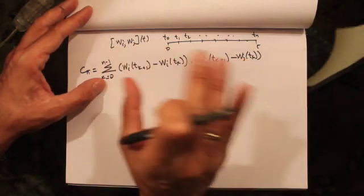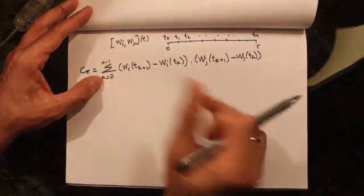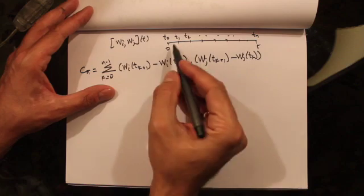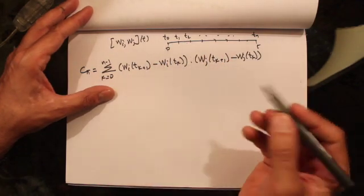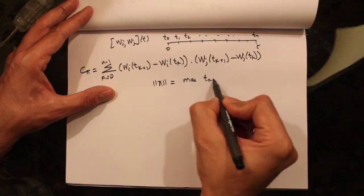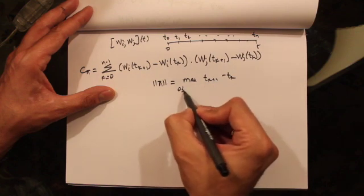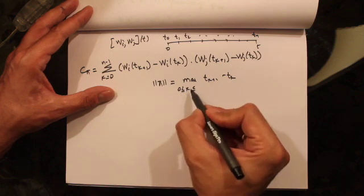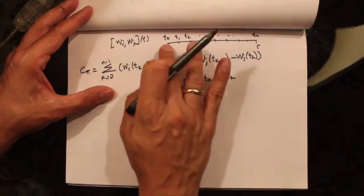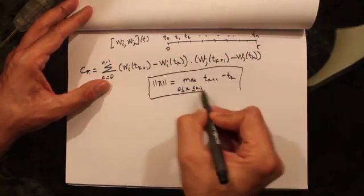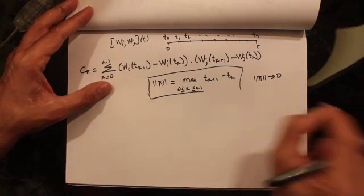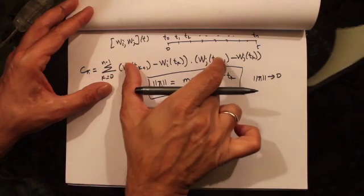This is how we calculate cross variation. Now what we want to do is calculate this as the largest time step goes to zero. The largest time step is denoted by double-norm of π, which is the max of (t_{k+1} - t_k) for 0 ≤ k ≤ N-1. We want to see what C(π) converges to as the largest time step goes to zero.